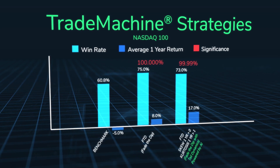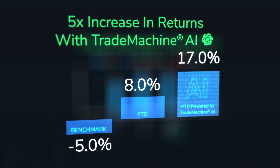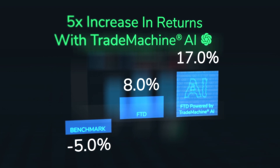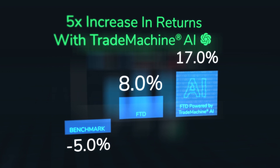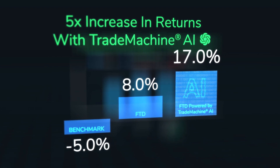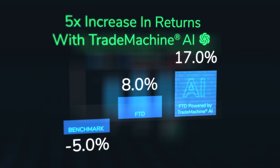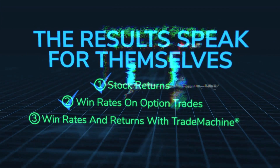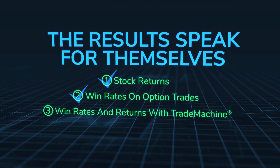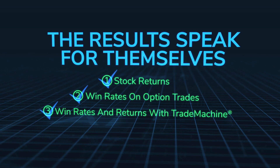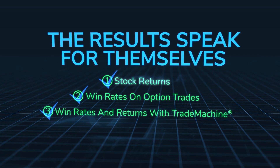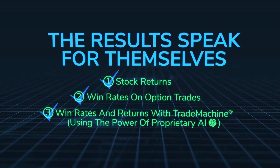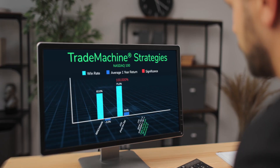The result: 17% returns. Fade the Dip is already a winner — this is the immense value of Trade Machine as it exists currently, and current Trade Machine members have been getting a lot of value from this strategy. But Fade the Dip with skew and kurtosis is a bigger winner, and this is just the start of the immense value of Trade Machine's upgrade. I showed stock returns and three option strategies — I could have filled five hours with strategies in Trade Machine and how they've improved.